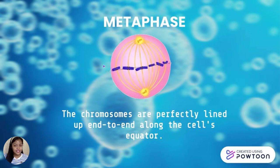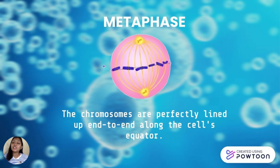Next, we have metaphase. The chromosomes are perfectly lined up end-to-end along the cell's equator. The mitotic spindle's threads extend from the centrioles, which are now at opposing poles of the cell. The sister chromatids are connected by the mitotic spindle threads.